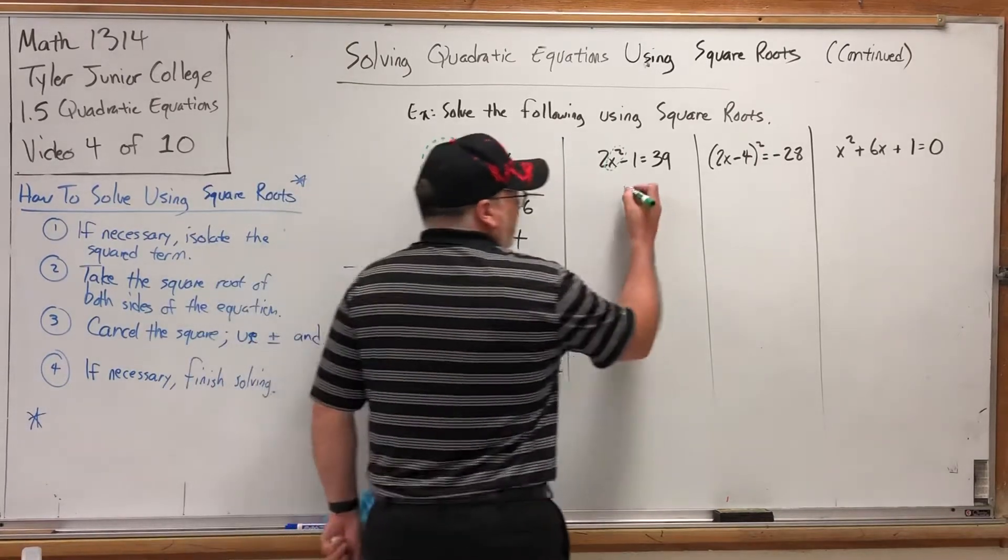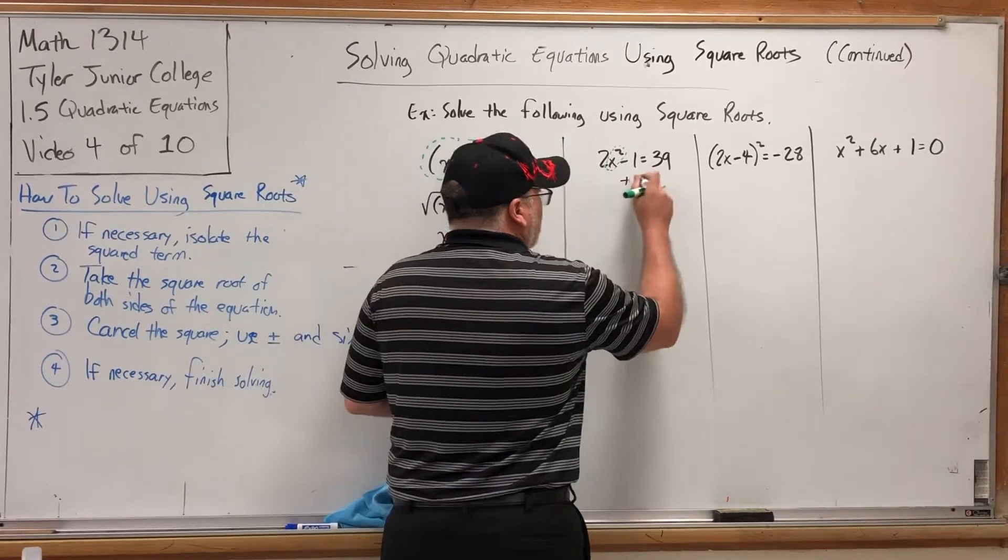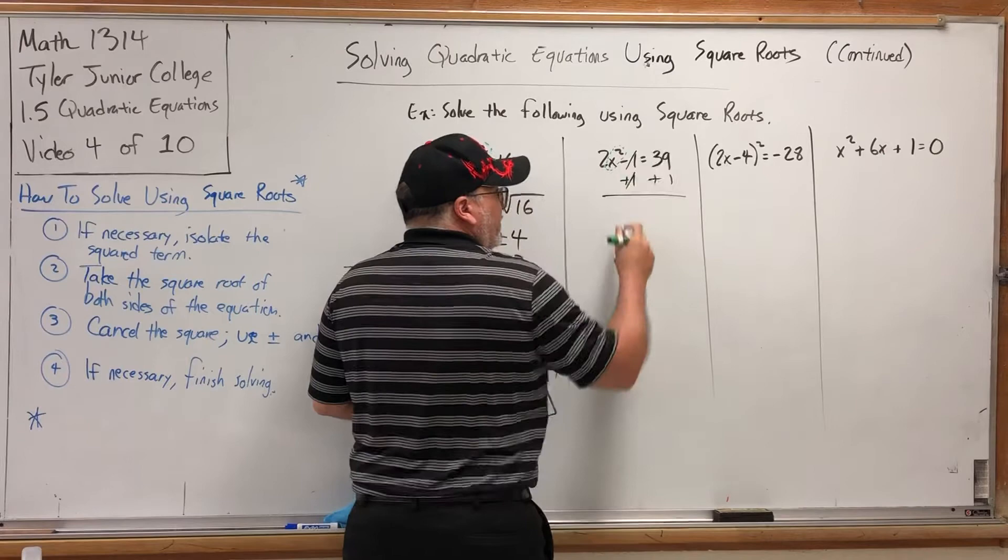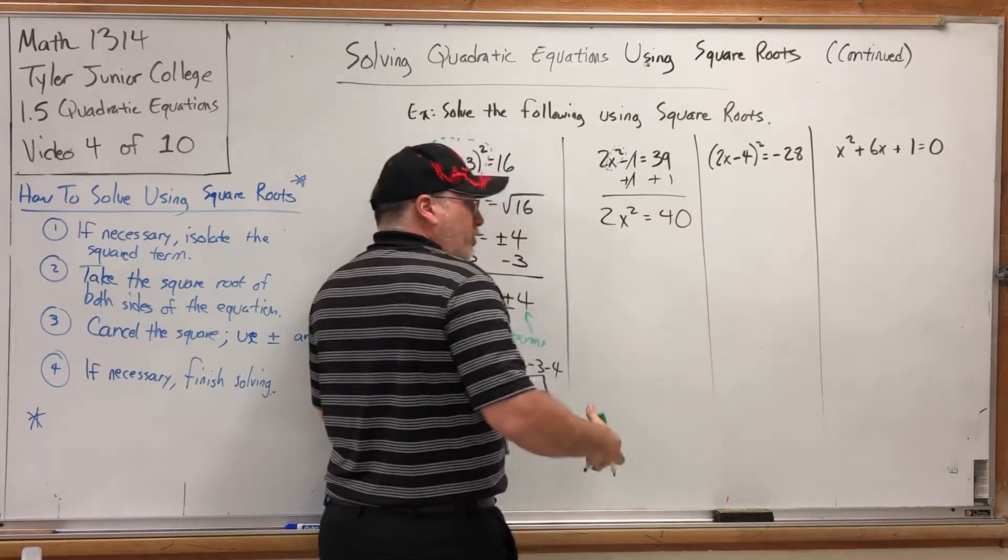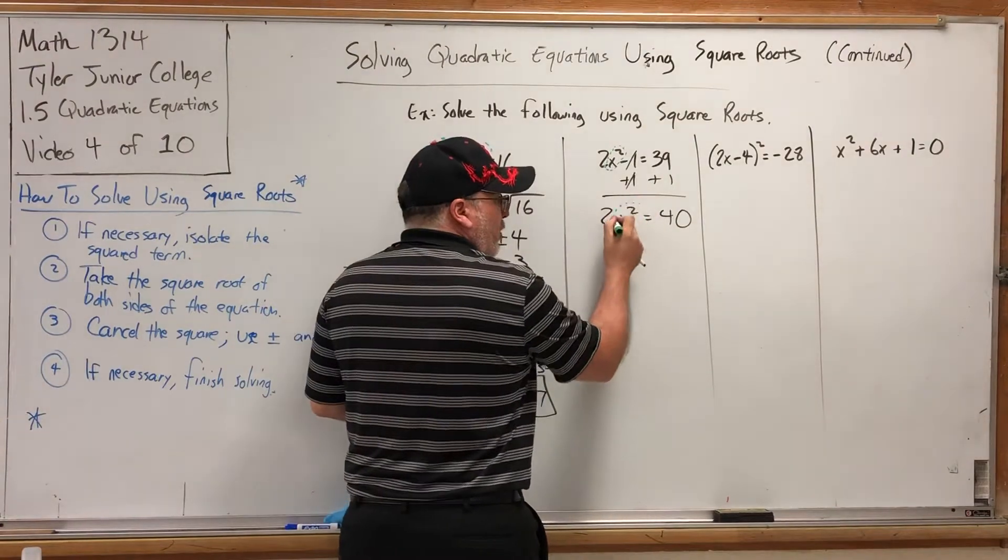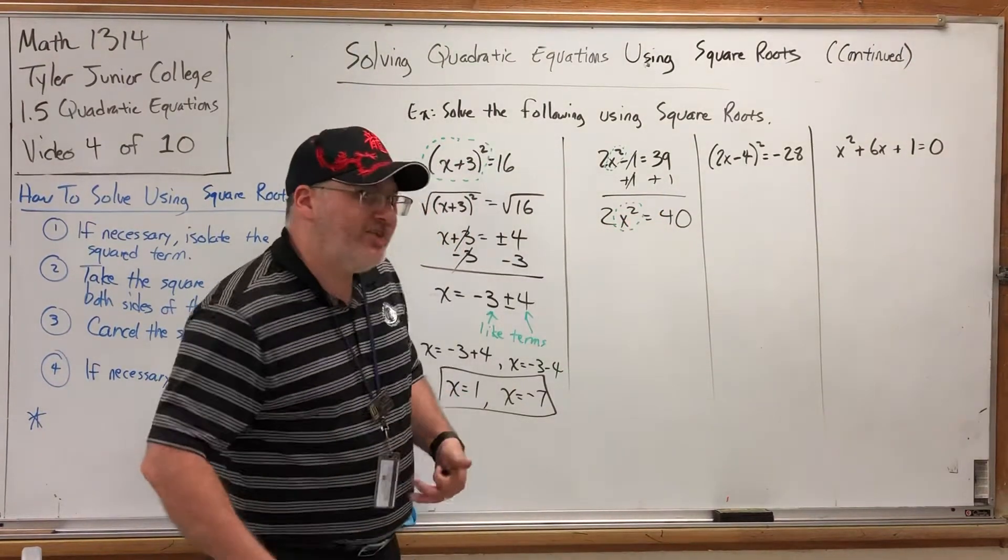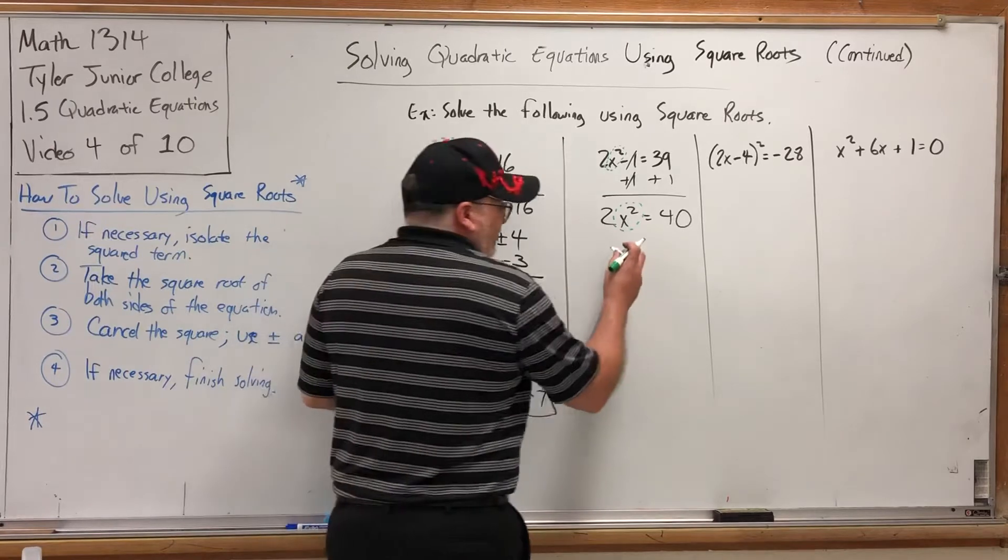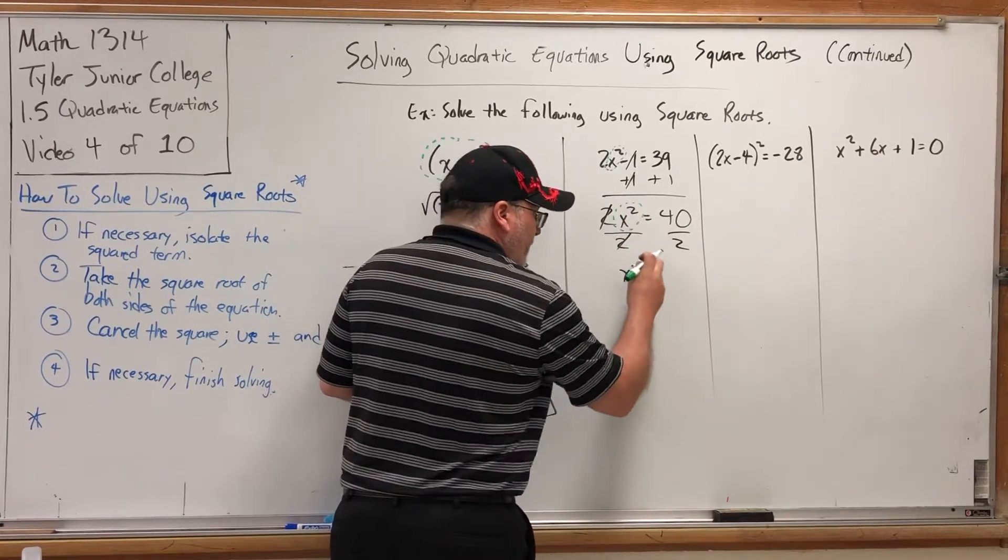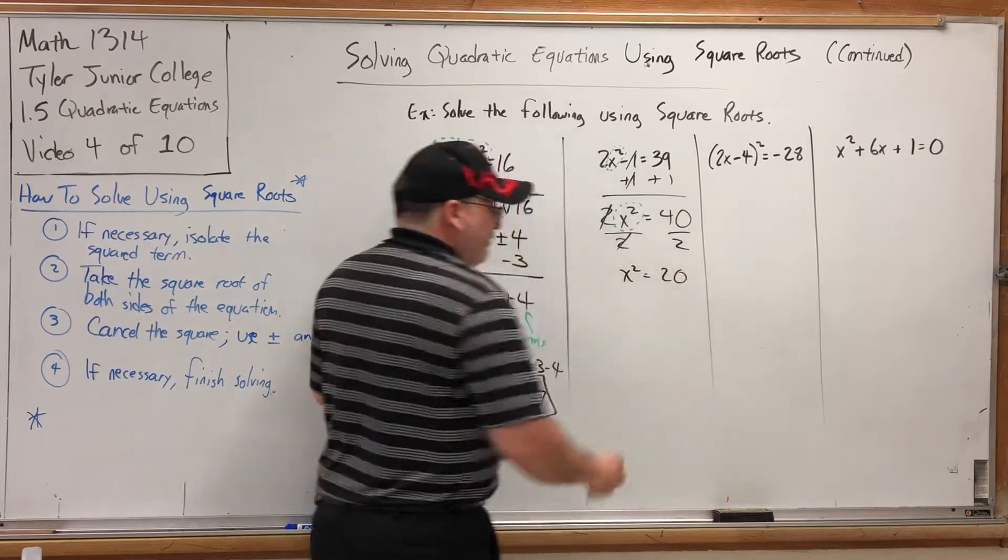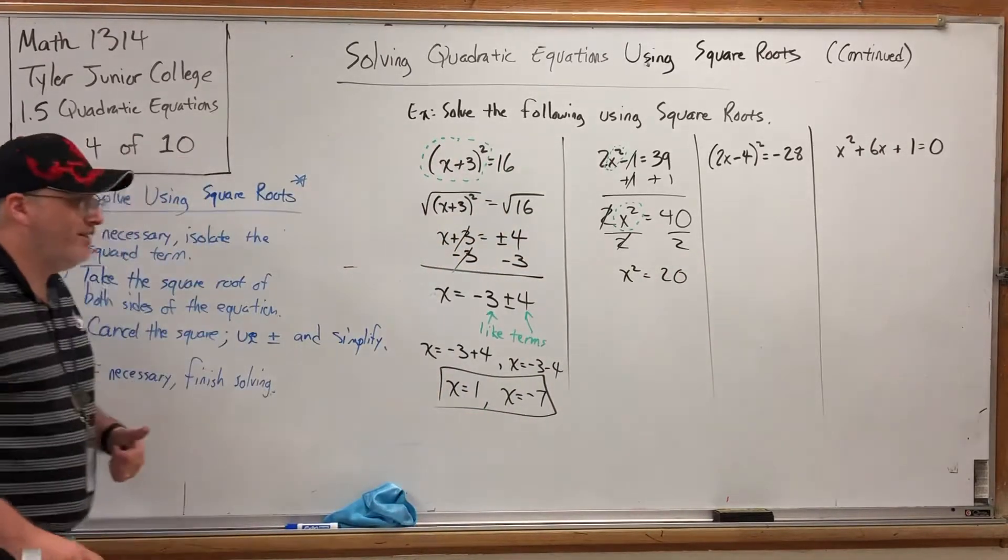So first rule of business, isolate the x squared. Add 1 to both sides. That leaves 2x² = 40. And then get rid of the 2 by dividing, since it's multiplied. 2's cancel. x² = 20. First step accomplished. I've isolated the square term.